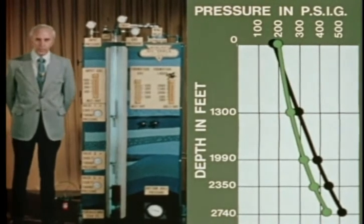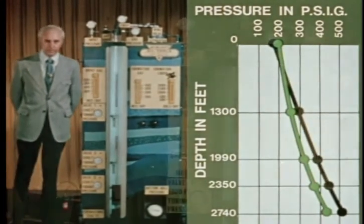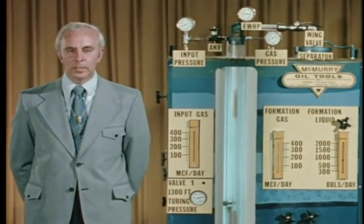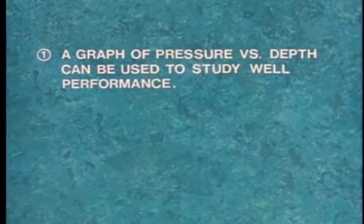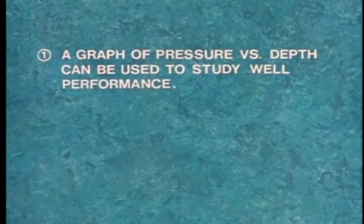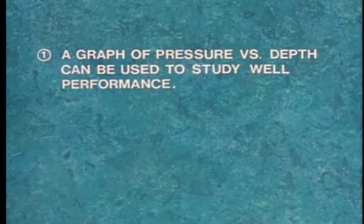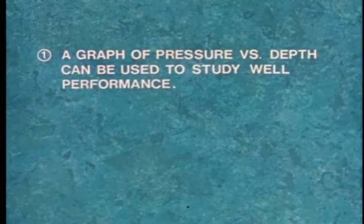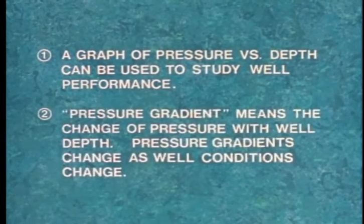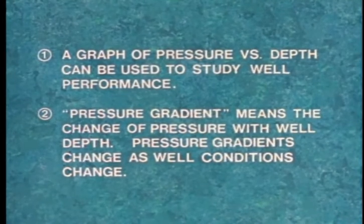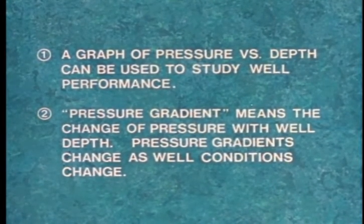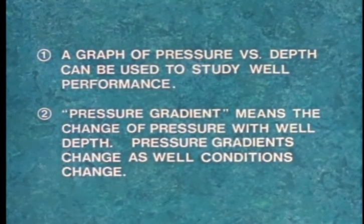Comparing the green line and the black line lets us easily see the changes that have occurred in the flowing gradient curve with a change in well conditions. To summarize: the well model simulates the behavior of an actual well, and a graph of pressure versus depth can be used to study well performance. Pressure gradient means a change of pressure with well depth, and pressure gradients change as well conditions change, making them very useful in studying well performance.